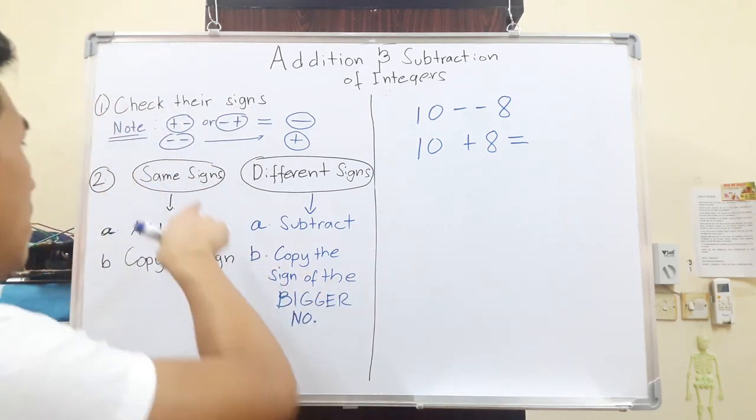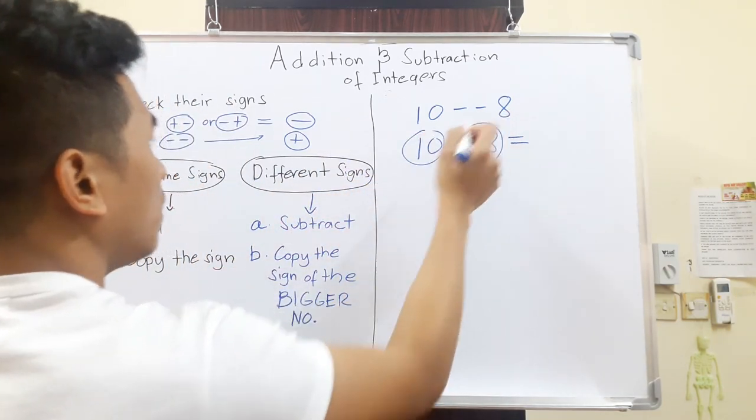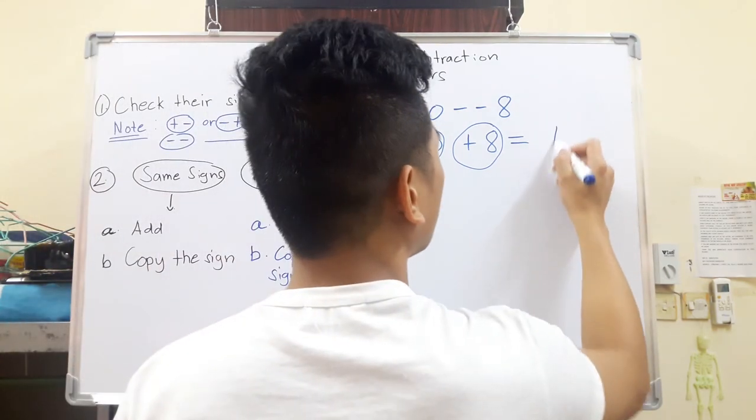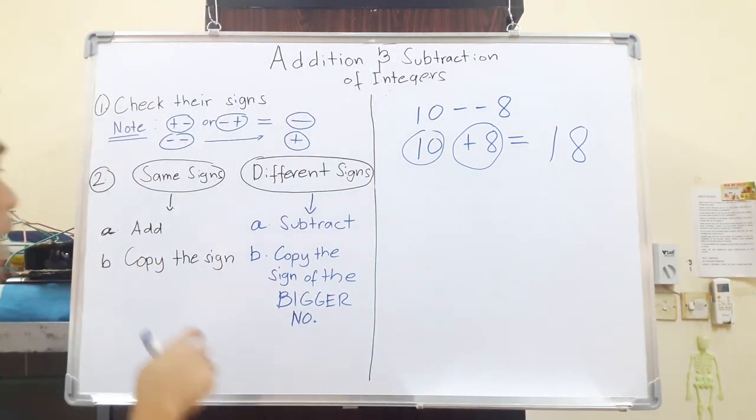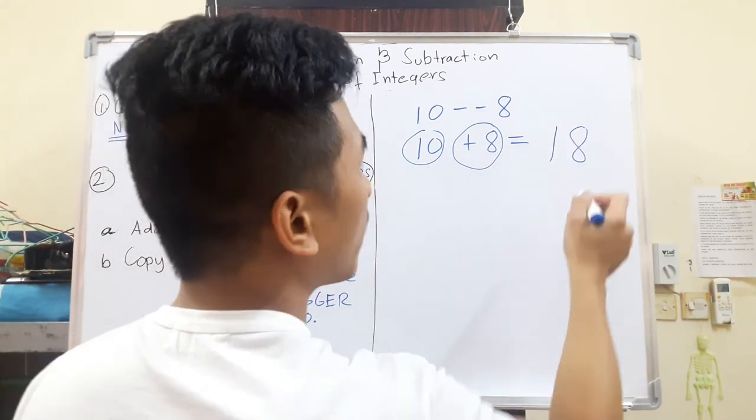And 10+8, same sign? Yes, they are both positive. Positive 10, positive 8. So add them, so 18. And then, copy the sign. They are both positive, so positive, but we don't have to write.